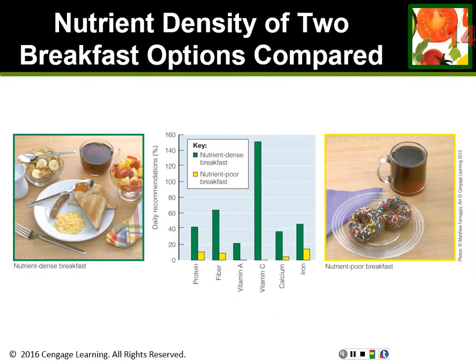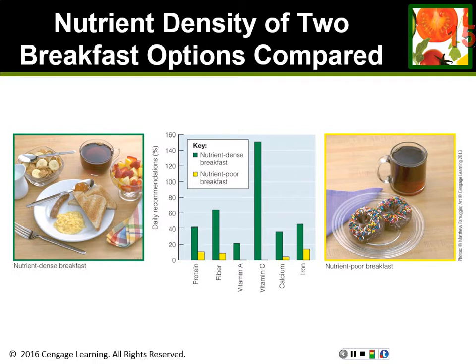Here is a picture that shows the concept of nutrient density further. Both of these breakfasts have the same calories. Look at how much more food you get if you choose the breakfast on the left: a bowl of cereal with bananas, milk, a scrambled egg, toast with a little jelly, hot tea, and a bowl of fruit — all for the same calories as two chocolate-covered doughnuts. You're getting a lot more nutrition. That's a good example of a nutrient-dense choice on the left versus a low nutrient-density or empty calorie choice on the right.